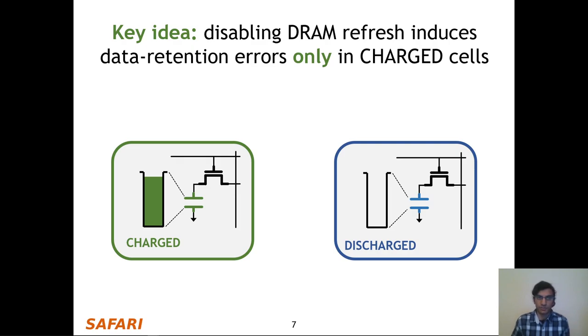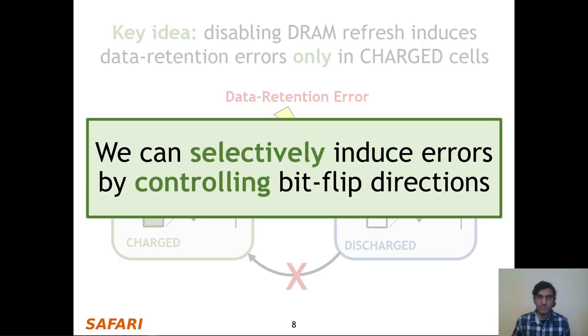On the right, the cell's capacitor is shown as discharged, and we refer to this as a discharge state. When we induce data retention errors, we can cause a charged cell to go to the discharge state, but an already discharged cell will typically not flip to the charged state. This means we can selectively induce errors by controlling bit flip directions.